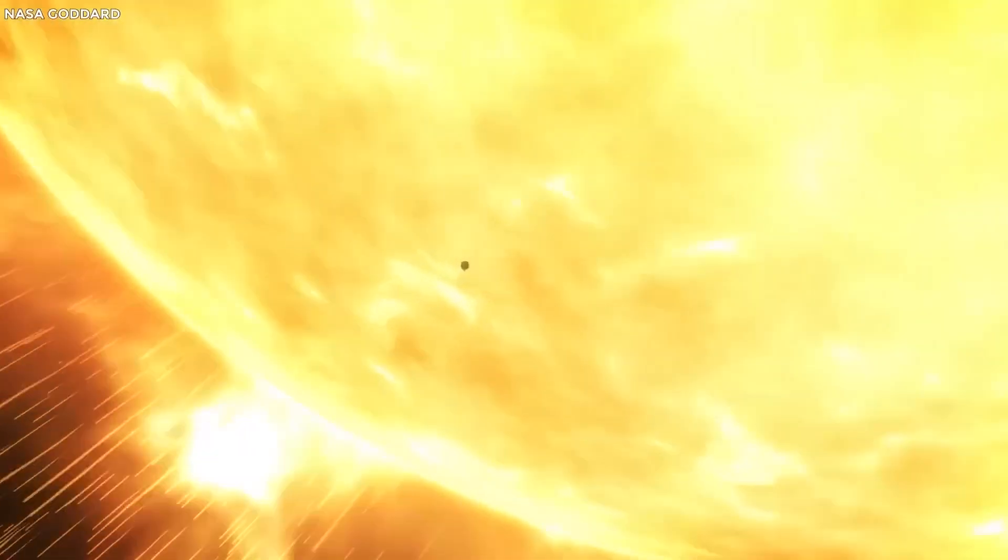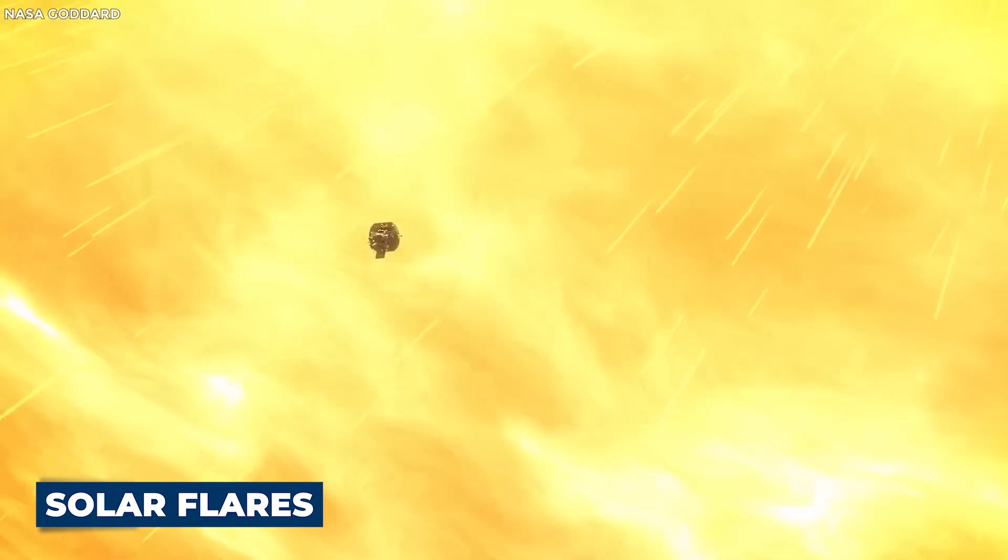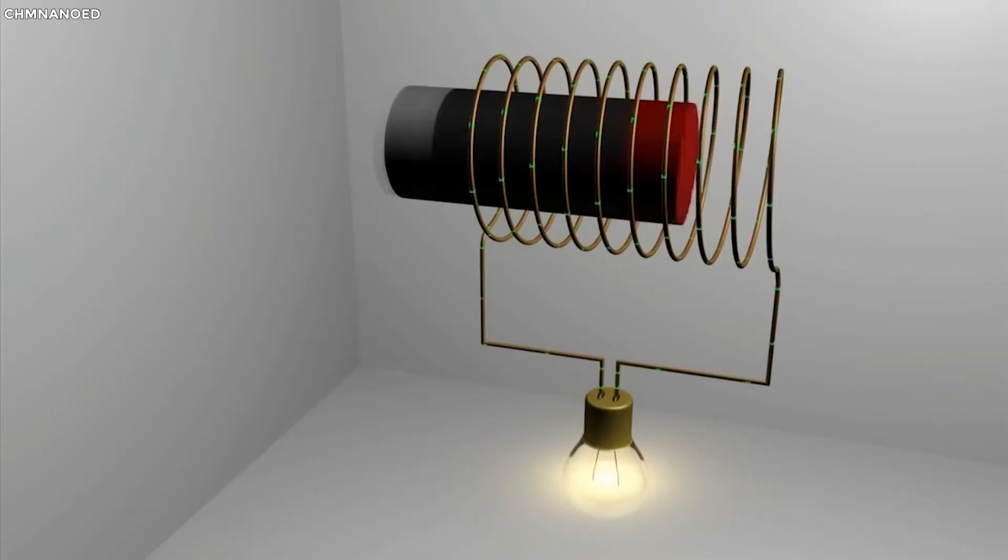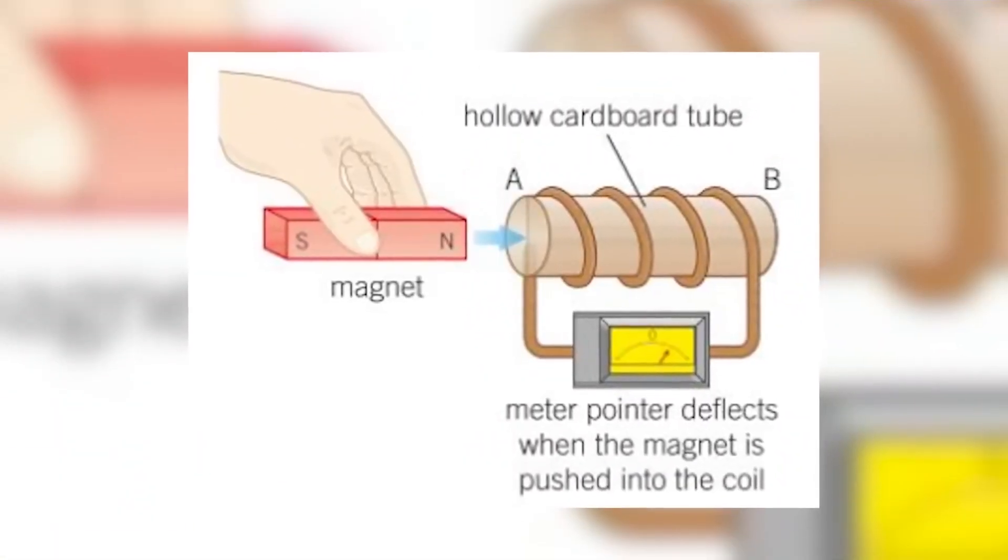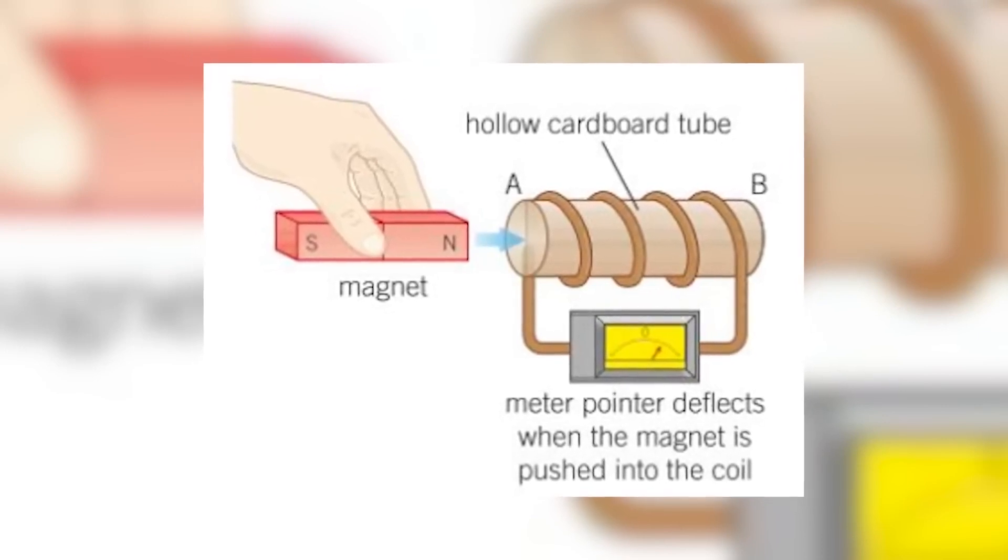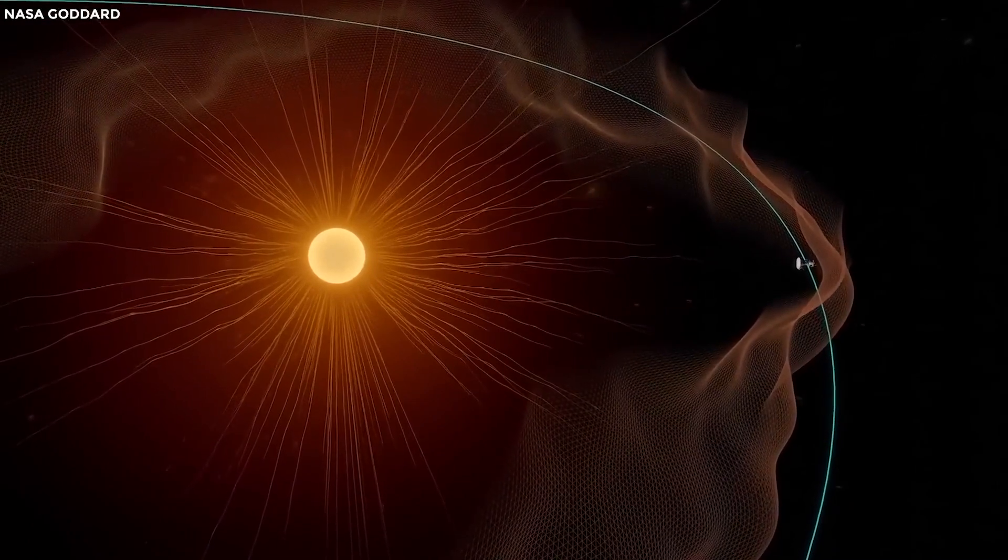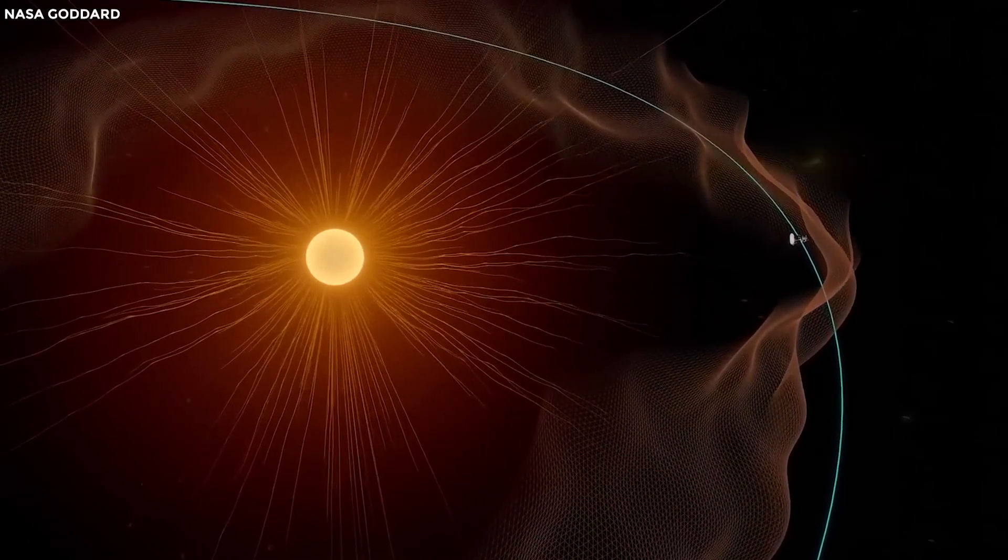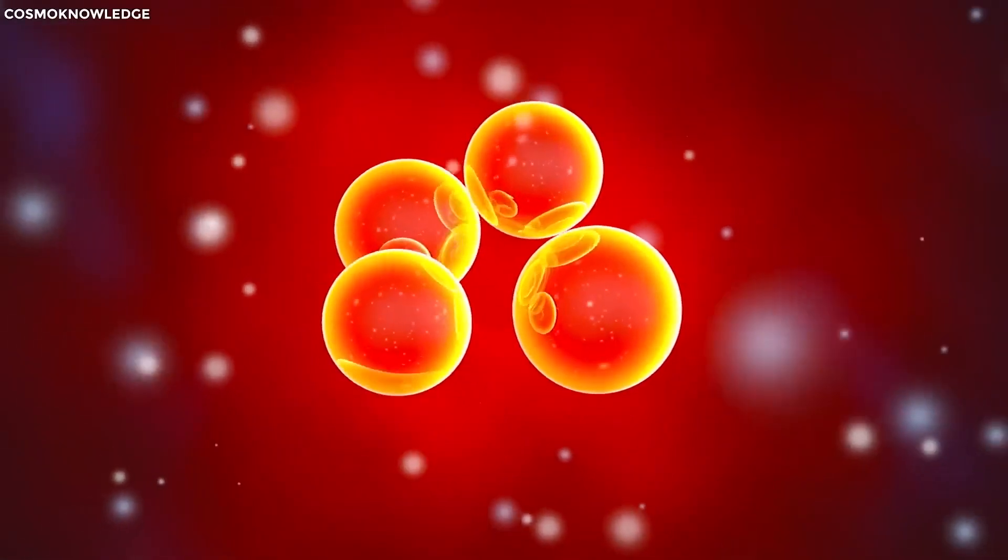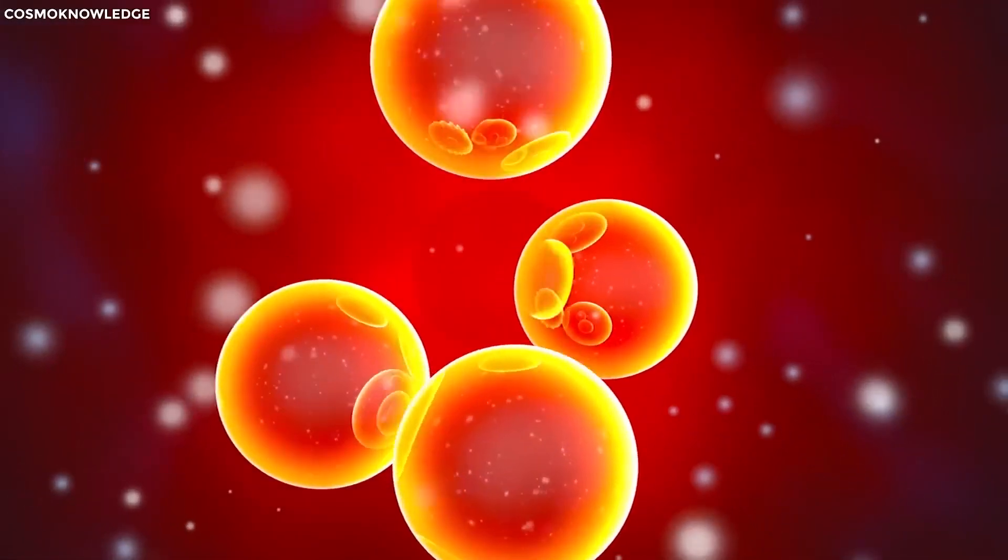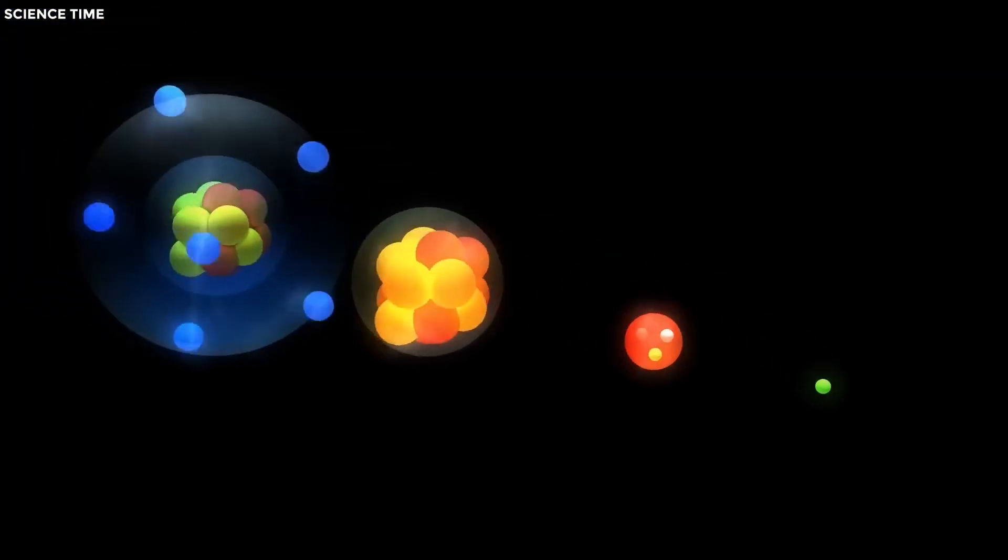The Sun also produces a spectacle by the name of solar flares. You might think that these are similar to the solar winds we just talked about. However, the two have their major differences. Solar flares are massive eruptions of electromagnetic radiation from the Sun's surface, usually associated with sunspots, areas of intense magnetic activity.